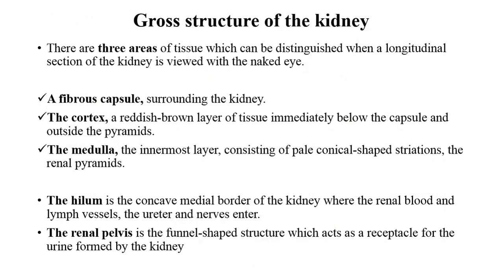Gross structure of the kidney: from the cross-section of the kidney, three distinct layers can be seen. First, the outer fibrous capsule — dark reddish-brown in color surrounding the kidney. Second, the renal cortex — light reddish-brown, immediately below the capsule and outside of the pyramids. Third, the renal medulla — the innermost layer consisting of pale conical striation and the renal pyramids. On the medial border of the kidney there is the hilum, the site where all of the renal blood vessels enter and leave the kidney.